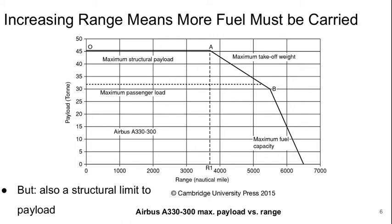In this video I'm going to explain what is happening on this payload versus range curve for a typical commercial aircraft. We have three segments of the curve: a horizontal segment where the payload is constant up to some certain range, then the payload decreases up to a certain point, and then it decreases more steeply. So what's happening in each of these regions?